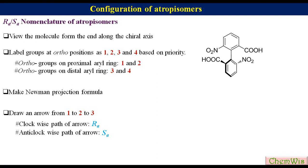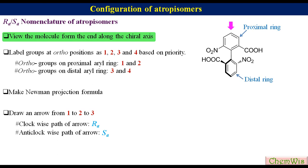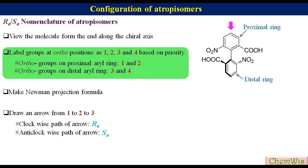Let's take the example of one enantiomer of 6,6'-dinitro-2,2'-diphenic acid. Step 1: view the molecule from the end along the chiral axis. If we view from the top end, this is the proximal ring and this is the distal ring. Step 2: labeling of ortho substituents. The nitro group with higher priority on the proximal ring is labeled 1, while the carboxylic group with lower priority is labeled 2. The nitro group with higher priority on the distal ring is labeled 3, while the carboxylic group with lower priority is labeled 4.